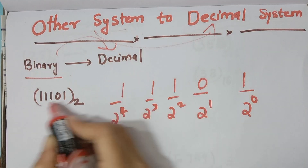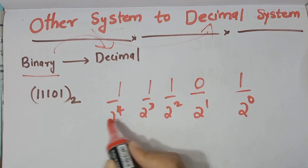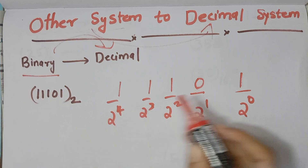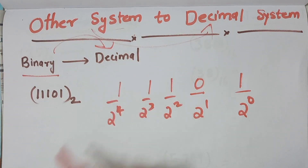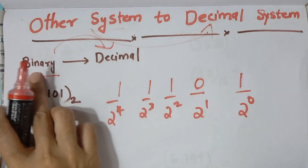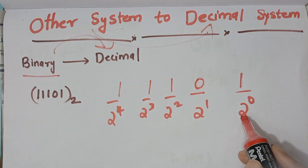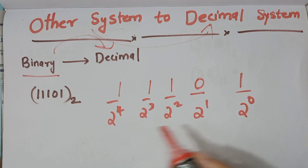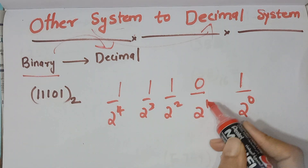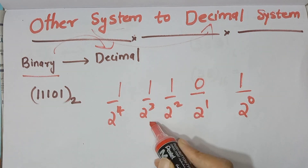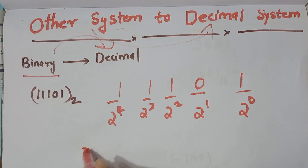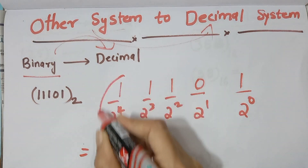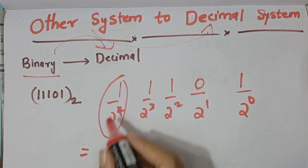The left-to-right positions are 0, 1, 2, 3, 4. The position values are 2 raised to 0, 2 raised to 1, 2 raised to 2, 2 raised to 3, and 2 raised to 4. This is the position value.